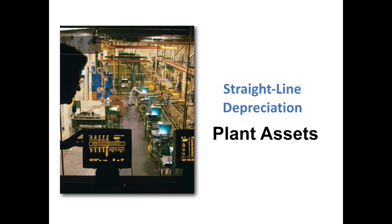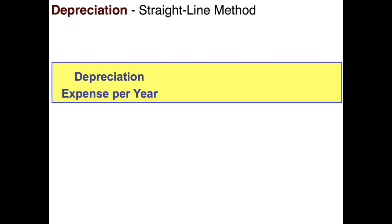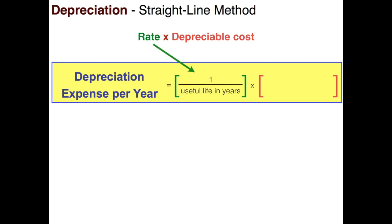In this video on plant assets we're going to be talking specifically about the straight-line method of depreciation. To calculate straight-line depreciation we're simply going to need a rate times depreciable cost. The rate under the straight-line method is calculated by taking one divided by the useful life, and then multiplying that times depreciable cost.